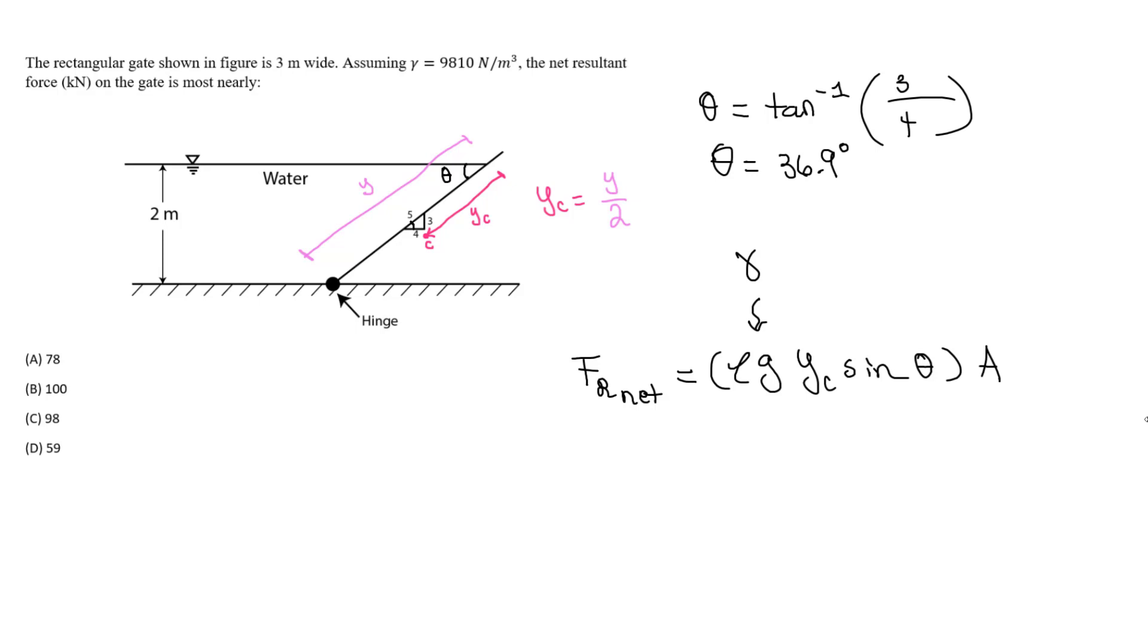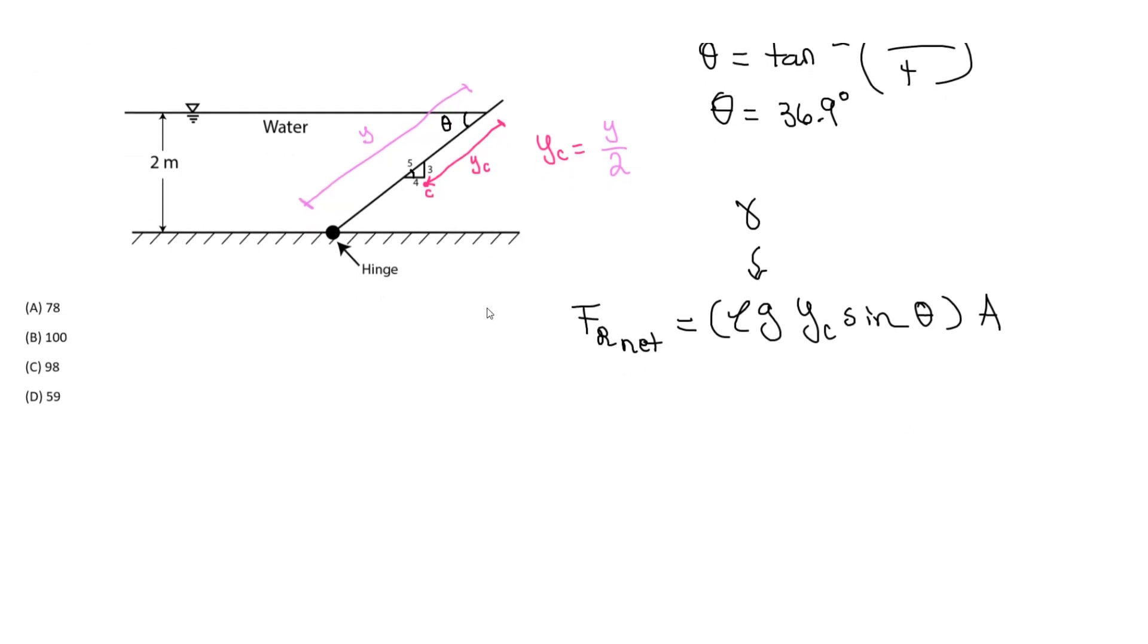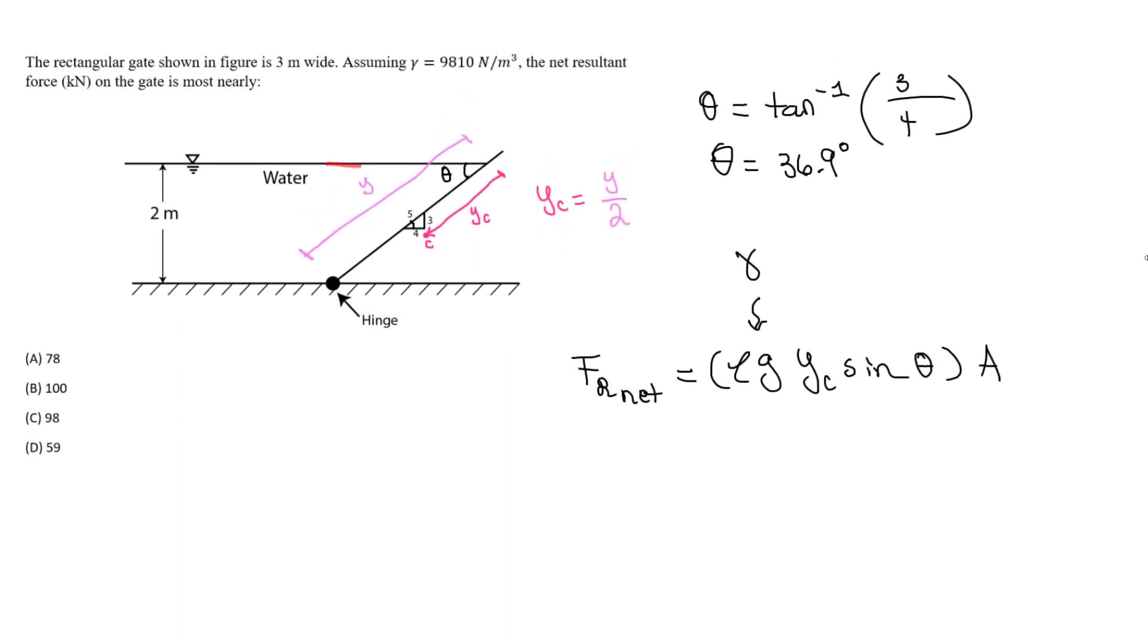Y sub c is going to be simply our y divided by 2. We can find y by doing the triangle rule, Pythagorean theorem, SOHCAHTOA. I'm going to look at this triangle - we have the height, the base, and this hypotenuse which is going to be our y. We know this angle is theta, 36.9, and we know this is 2 meters. So we do sine of 36.9, which is our angle theta, equals the opposite over the hypotenuse which is our y, and then we solve for y.